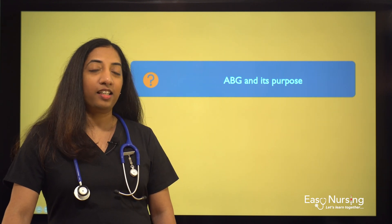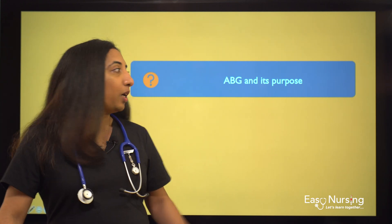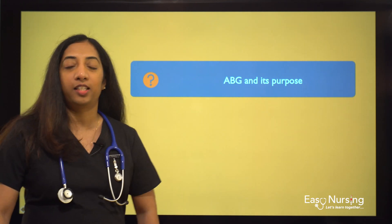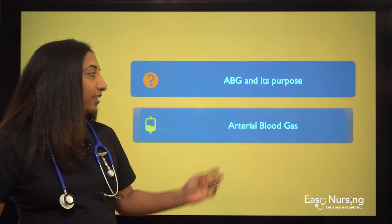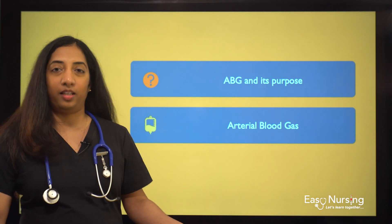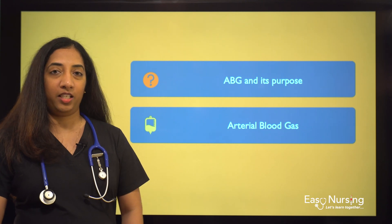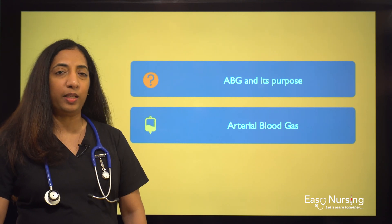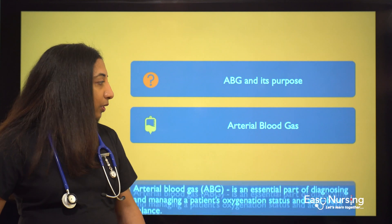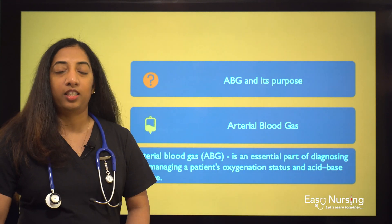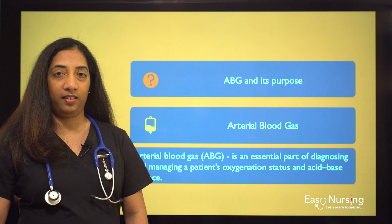Before we start talking about ABG interpretation and its technique, let's talk a little bit about ABG — what it is and what its purpose is. ABG is arterial blood gas: the blood which is taken from the artery of a patient. We do ABG to determine the oxygenation and the acid-base balance of a patient.